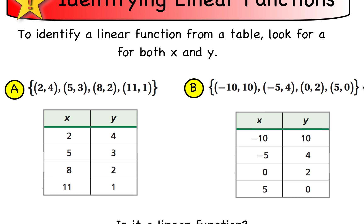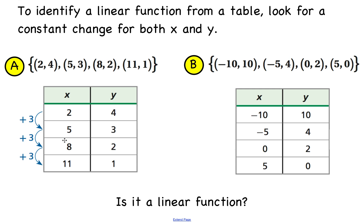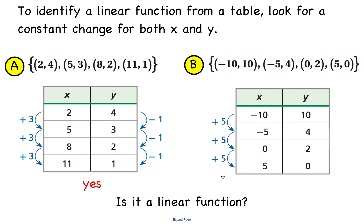We also want to be able to identify a linear function from a table. When identifying from a table, look for a constant change for both variables x and y. In the first example, x increases by 3 consistently and y changes by −1 consistently, so this is a linear function. In the second example, x goes up by 5s, but y went down by 6 for the first change and only by 2 for the next — that is not a constant change, so it is definitely not a linear function.